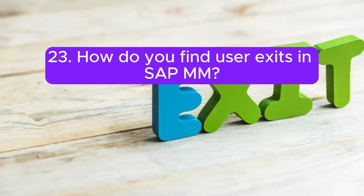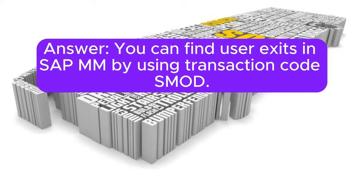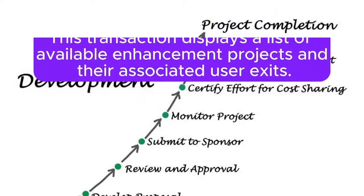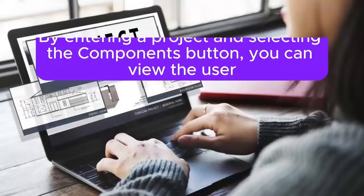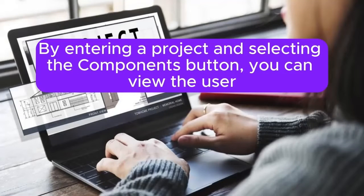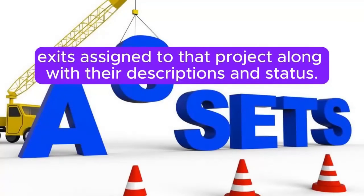How do you find user exits in SAP MM? You can find user exits in SAP MM by using transaction code SMOD. This transaction displays a list of available enhancement projects and their associated user exits. By entering a project and selecting the Components button, you can view the user exits assigned to that project, along with their descriptions and status.